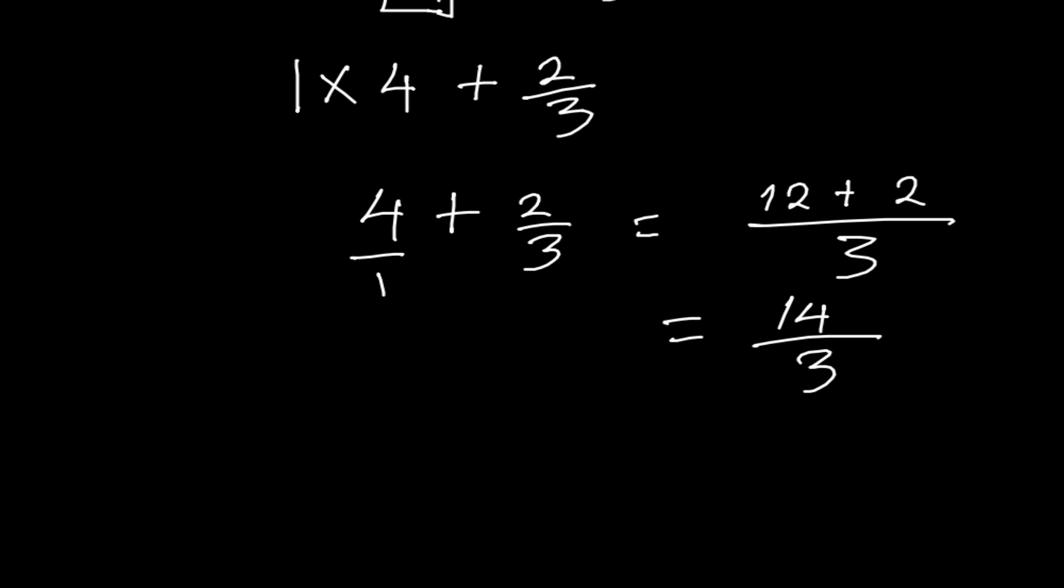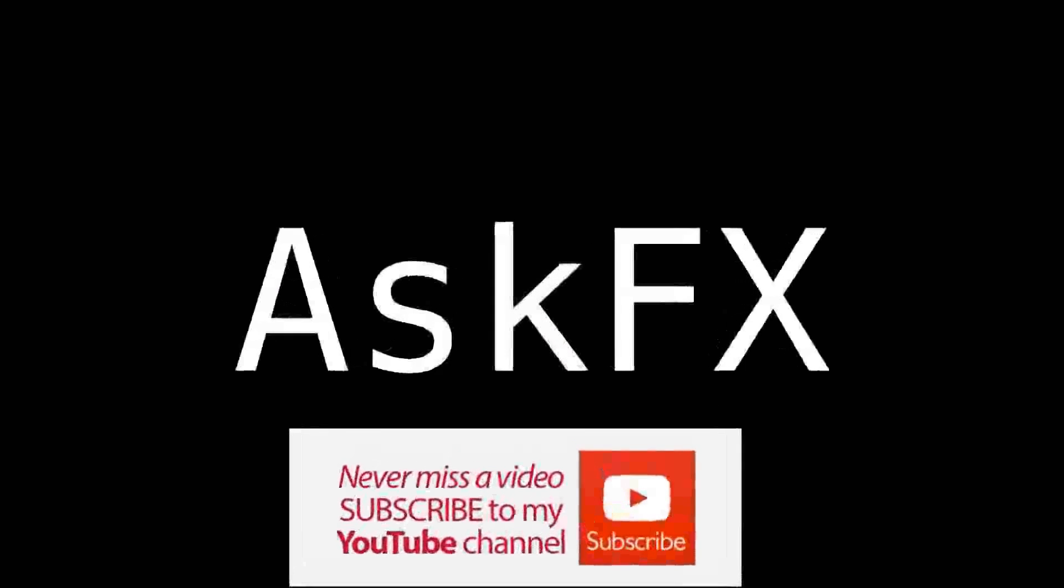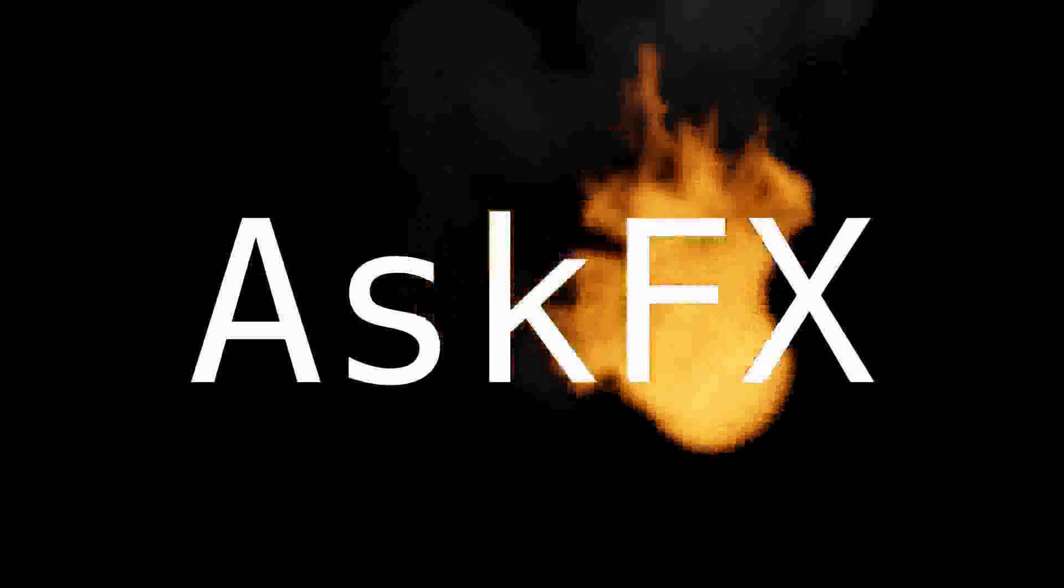And 14 over 3 can be written as a mixed number. How many times does 3 go into 14? 3 can go into 14 in 4 exact times, and then you remain with a 2 out of 3. And that is our answer. Thank you.